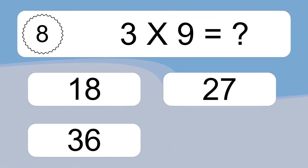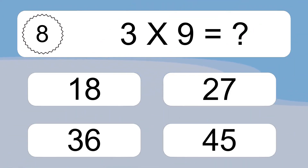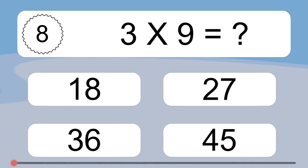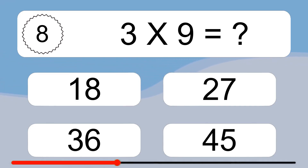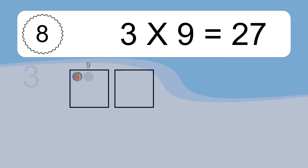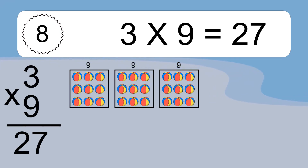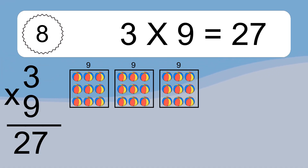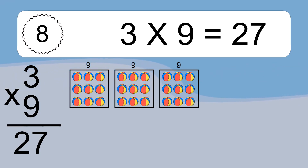3 times 9 equals what? 3 times 9 equals 27. We have 3 boxes, and each box has 9 colorful balls inside. If you count all the balls in all the boxes together, you will have 3 times 9 balls. This equals 27 balls.